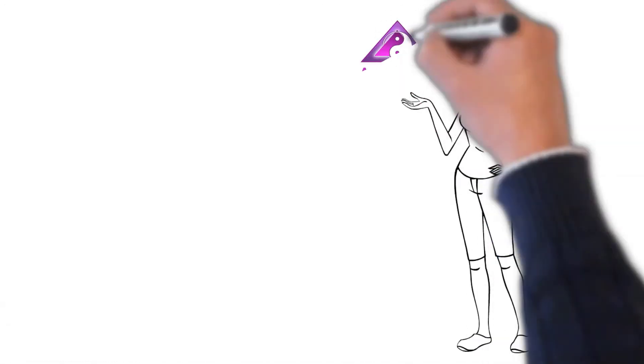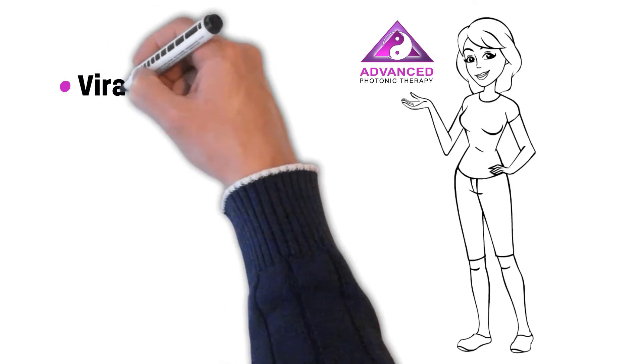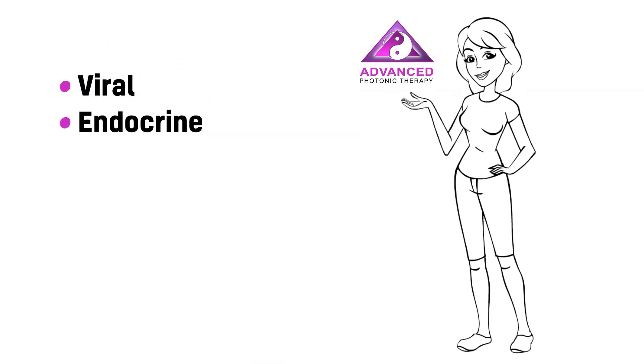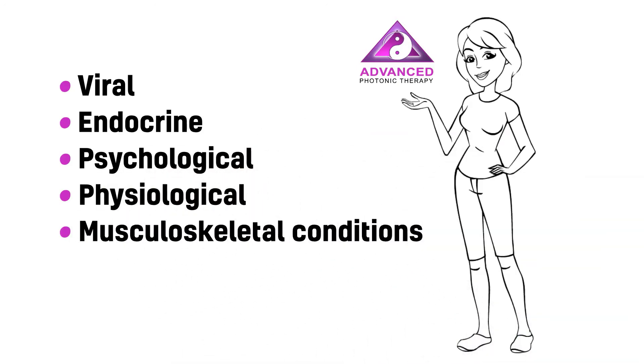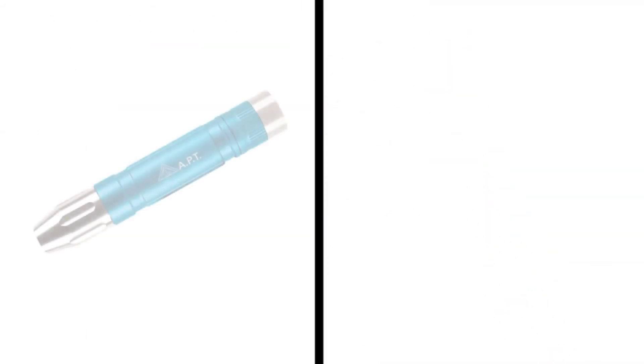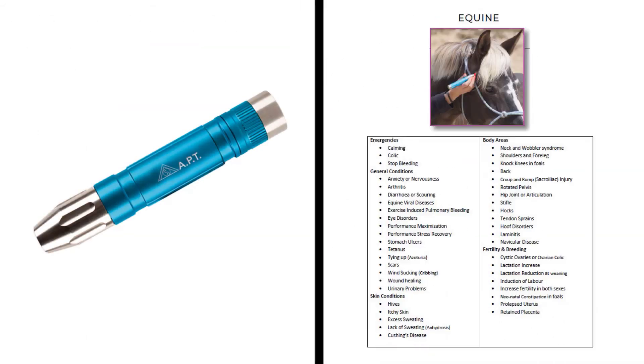So in conclusion, with advanced photonic therapy we can manage viral, endocrine, psychological, physiological, and musculoskeletal conditions and relieve pain. You only need two things: our red light torch pen and the information pack of your choice.